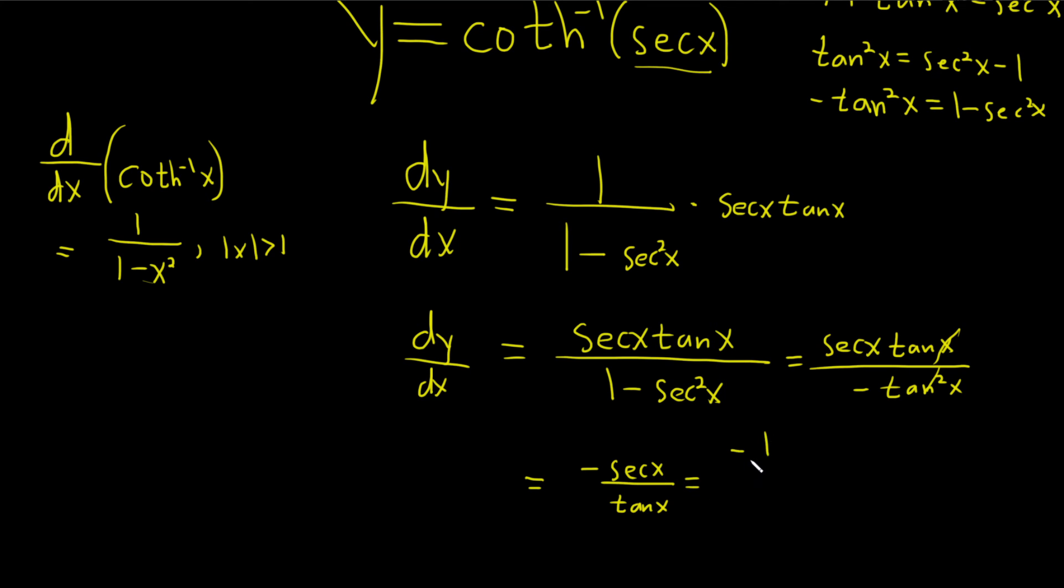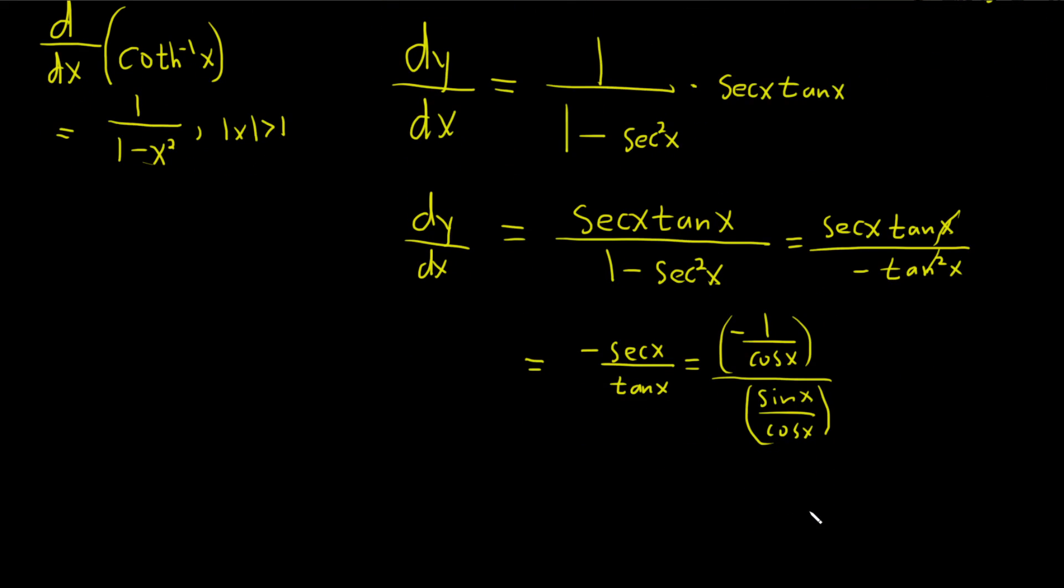Secant is 1 over cosine, and tangent is sine over cosine. And let's see, whenever we have two fractions and we're dividing them, we're really multiplying by the reciprocal.